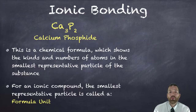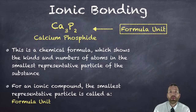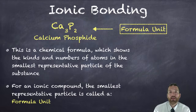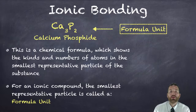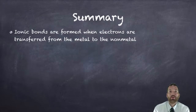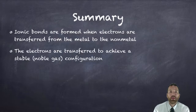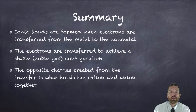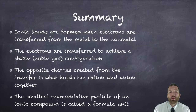For an ionic compound, the smallest representative particle is called a formula unit — it's not a molecule and it's not an atom. A formula unit is a term used specifically for ionic compounds: it's the smallest whole number ratio of all the elements in an ionic compound. Ca₃P₂ tells us that calcium and phosphorus are present and that the smallest whole number ratio is three calciums for every two phosphides. Ionic bonds are formed when electrons are transferred from a metal to a nonmetal to achieve a noble gas configuration, and opposite charges hold the cation and anion together.